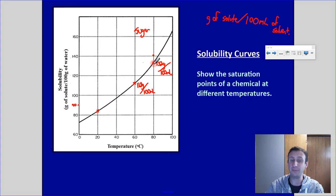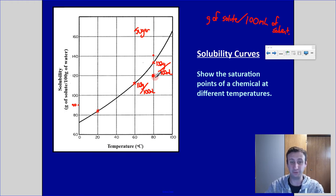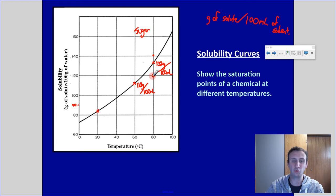That's the amount needed to make a saturated solution. What if we added just 120 grams of sugar at 80 degrees Celsius to 100 mils of water? In that case, I would have an unsaturated solution — it would all dissolve, but I could still dissolve more.